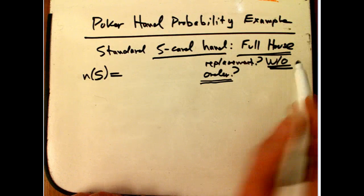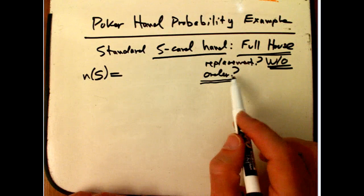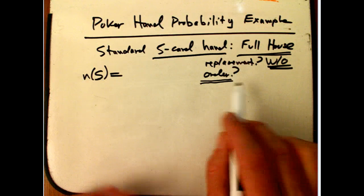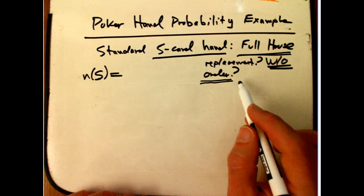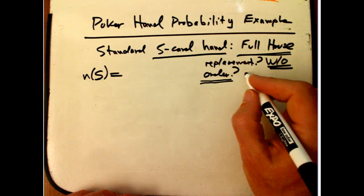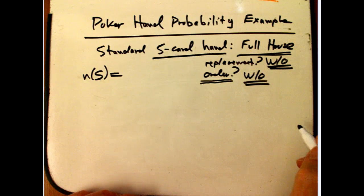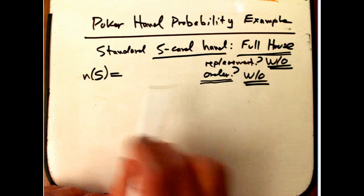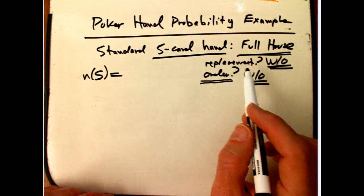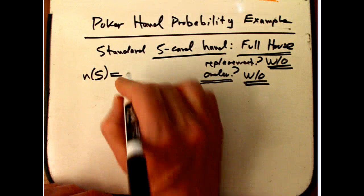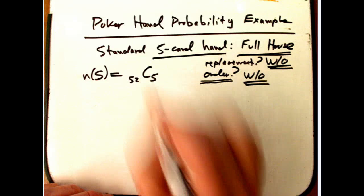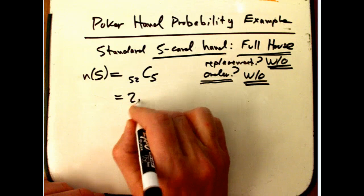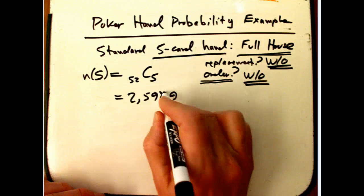Because it's without replacement, we can count without order as long as the order doesn't matter — as long as you don't win or lose depending on how the cards come to you in the deal. With other poker games the order might matter, but if you get them all in one deal, it's going to be fine. So we're going to count without order. That means we've got 52 cards, choosing five, without replacement, without order — that's a standard counting problem: 52C5, which equals 2,598,960.